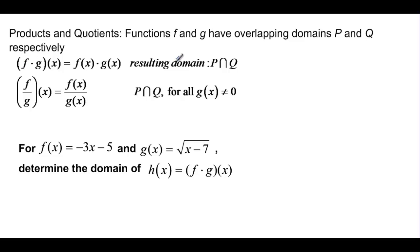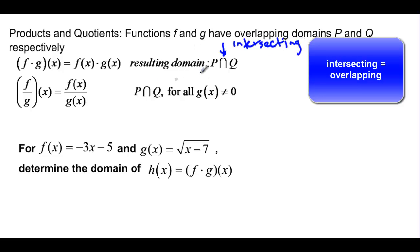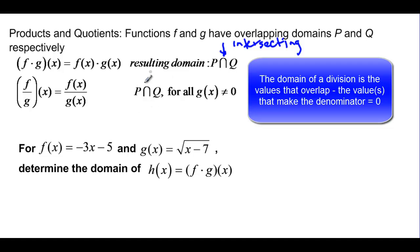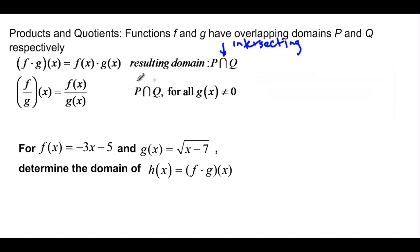Now we're going to talk about products and quotients. We have two functions with overlapping domains. The intersection symbol means what they have in common — not the combination of the two, just where they share the same values. This is true for addition and subtraction as well. For multiplication, the domain is the intersection of the two. For division, it's all elements of p and q in common, as long as g of x is not equal to 0.